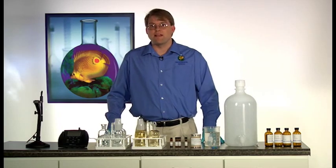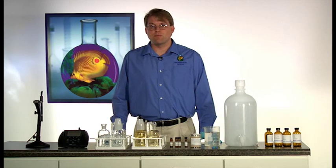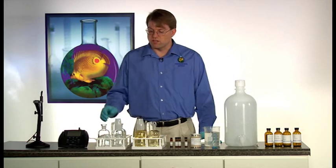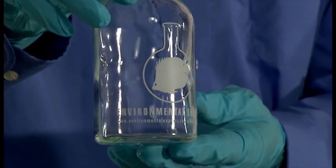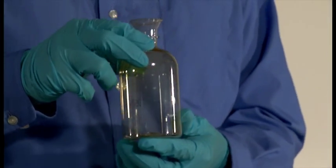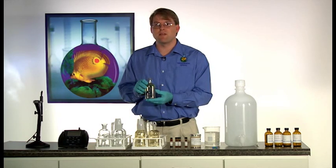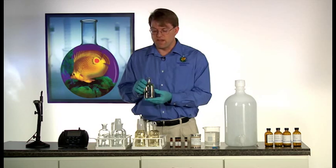After you have obtained adequate dilution water and prepared your seed and added your standard, you need to decide which bottle you would like to use for your BOD batch. Traditional glass bottles or plastic bottles are available for use. These plastic bottles are specially designed and approved by the EPA for use in the determination of biochemical oxygen demand and dissolved oxygen.